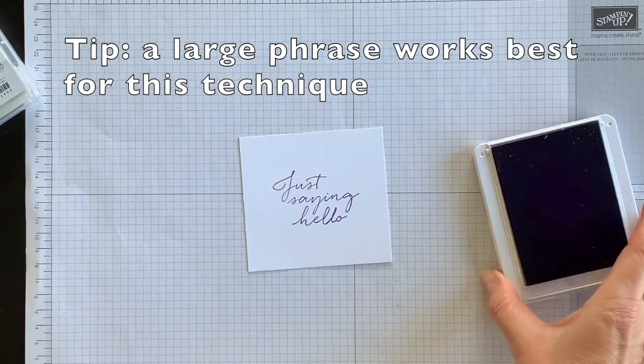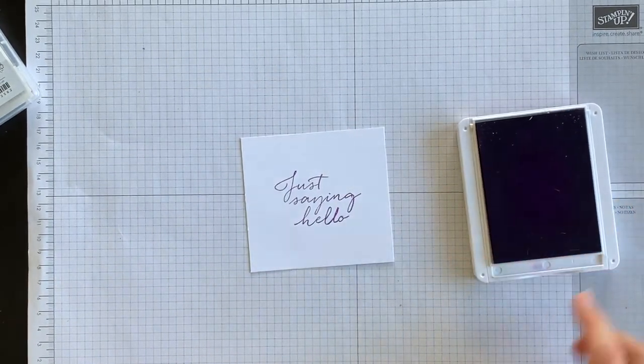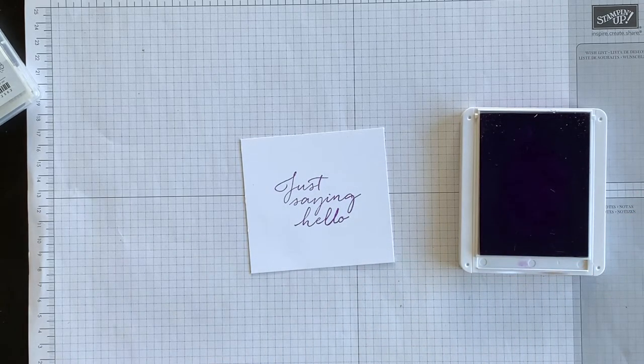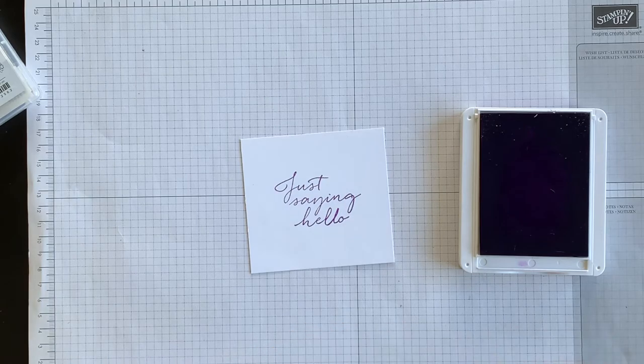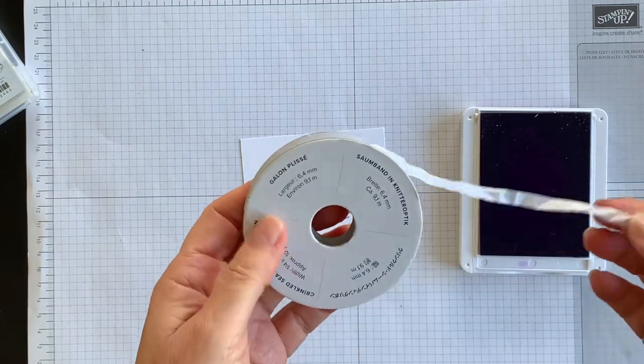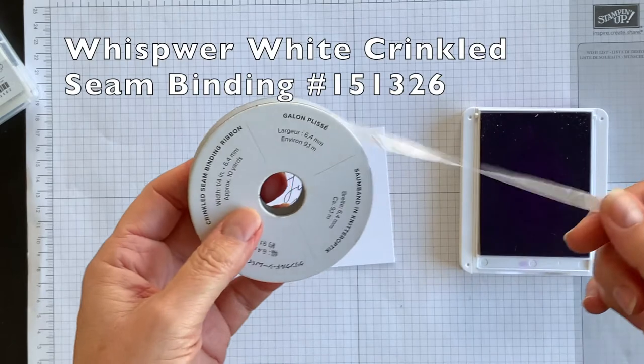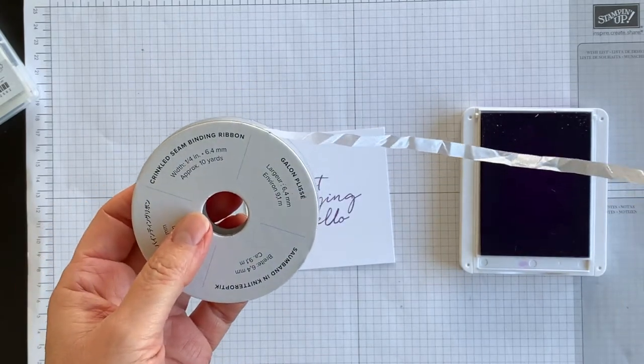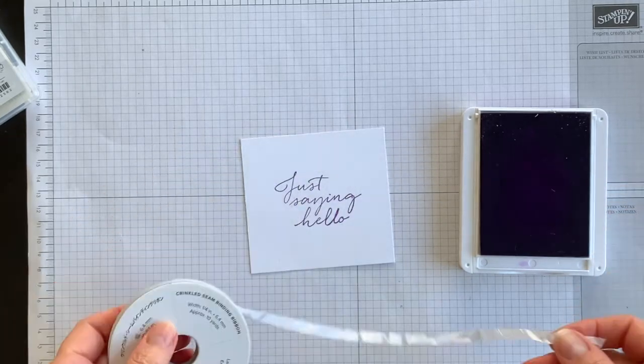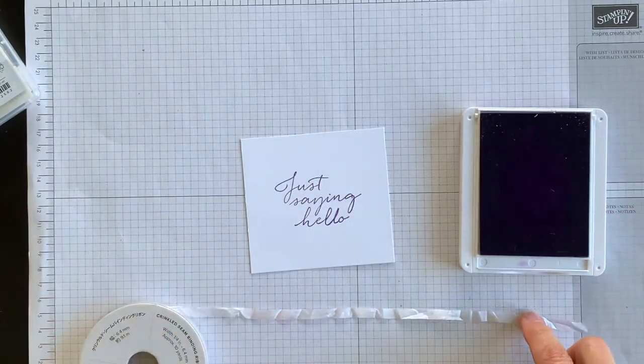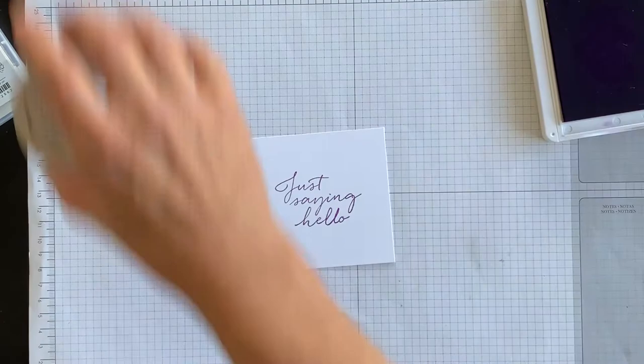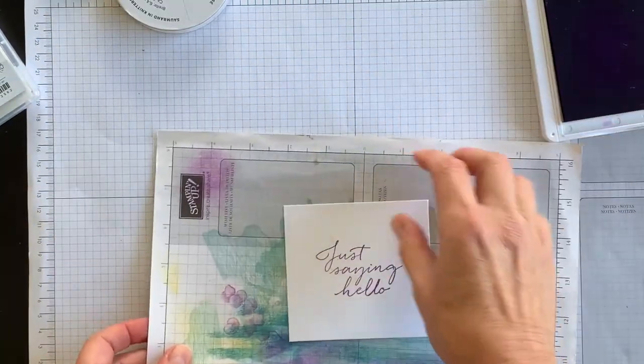Now having my Gorgeous Grape ink pad ready to go, the next step that I would suggest you do if you decide to make this card at home is to take some of the crinkled seam binding ribbon—it's the crinkled seam binding ribbon and it's Whisper White. I have a scrap piece of grid paper that I always keep handy. You're going to cut a length of ribbon that you want to use for your card.